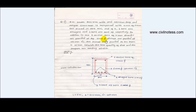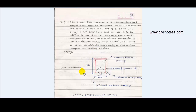In addition, two anchor bars of 10 mm diameter are provided at the top. 6 mm diameter stirrups are provided at 150 mm center to center. The overall cover provided to the beam is 25 mm. Calculate the total quantity of steel and also prepare the bar bending schedule.